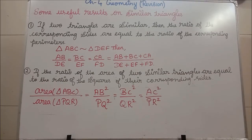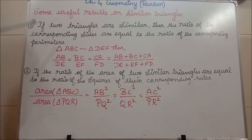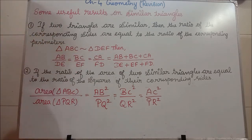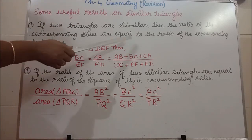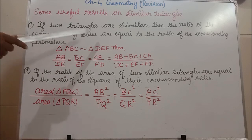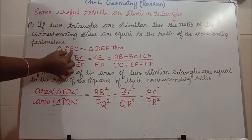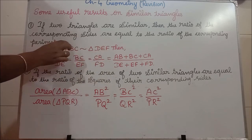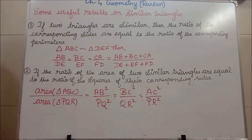Next, we are going to see some useful results on similar triangles. From your book, we have nearly five results, but the main ones — result one and two — are very important. If triangle ABC is similar to triangle DEF, then the ratio of the corresponding sides are equal: AB divided by DE equals BC divided by EF equals AC divided by DF.